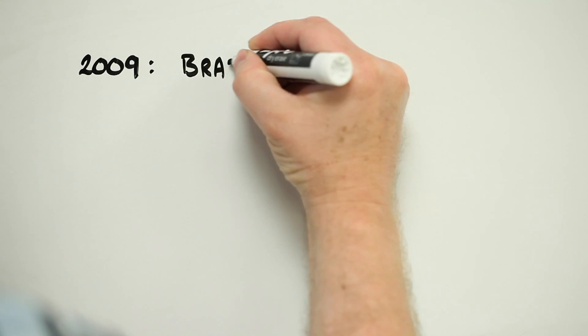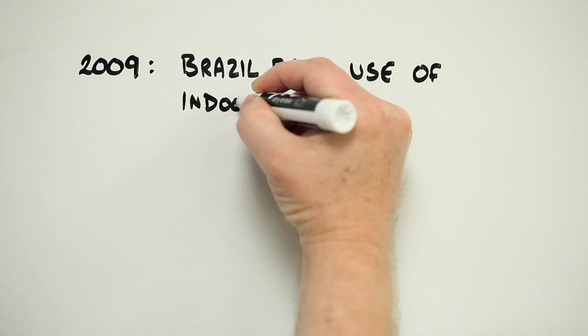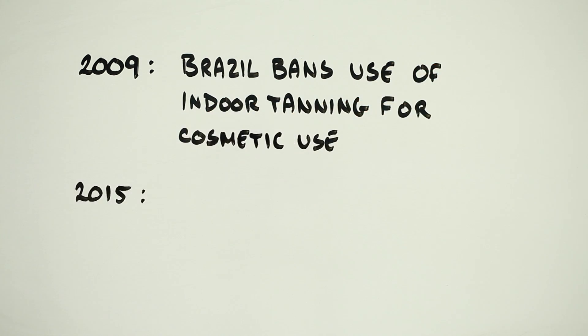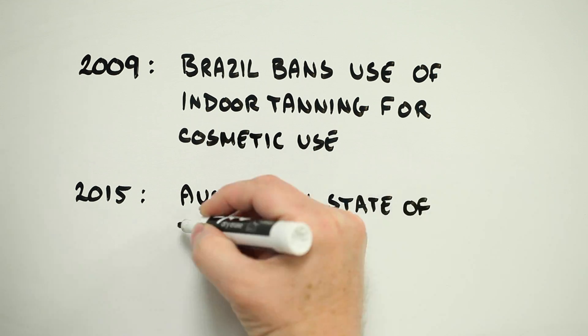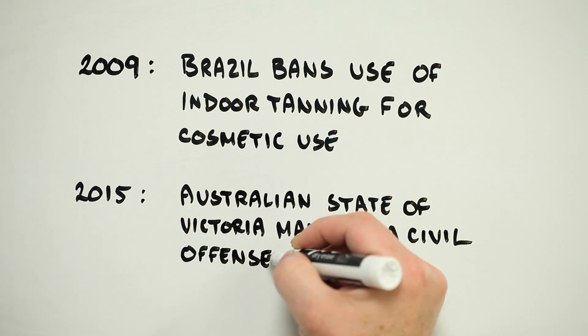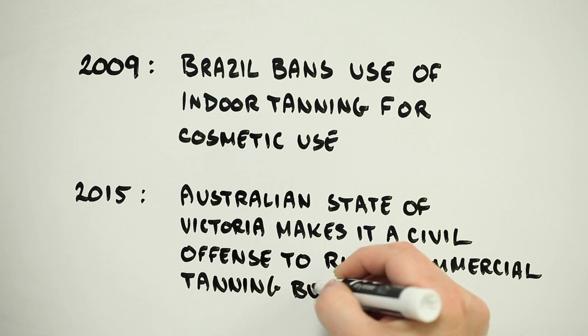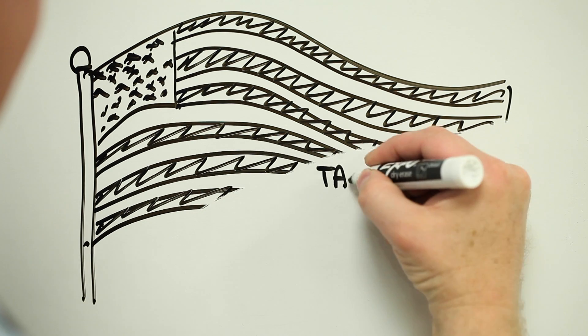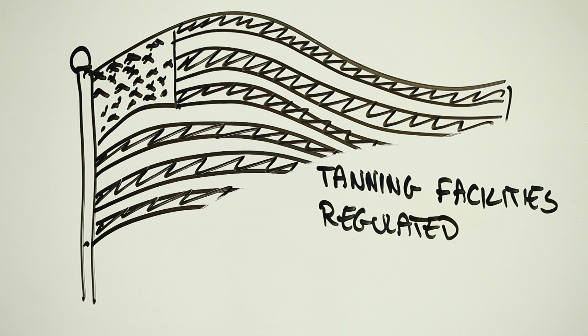In 2009, for instance, Brazil became the first country in the world to ban the use of indoor tanning for cosmetic use. And in January 2015, it became a civil offence in the Australian state of Victoria to run a commercial tanning business. Back in the US, all states now regulate tanning facilities to some degree, but these regulations vary widely in their effectiveness.